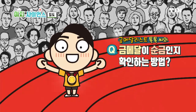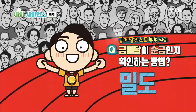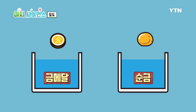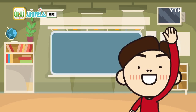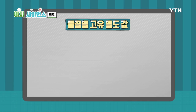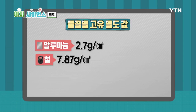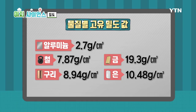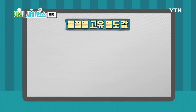궁금해졌다면 바로 밀도를 구하면 되는데요. 금메달과 무게가 같은 순금을 물이 꽉 찬 두 개의 수조에 넣어보겠습니다. 밀도는 같은 종류의 물질일 때 크기와 양에 상관없이 늘 일정한 값을 가지는 특징이 있습니다.